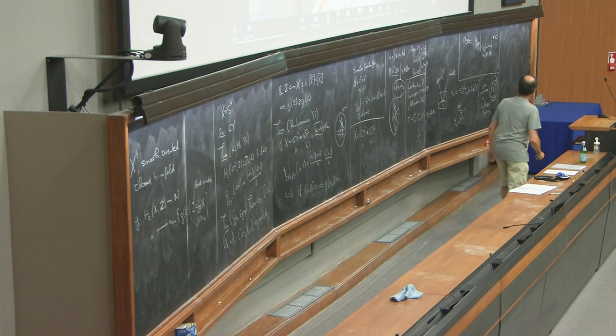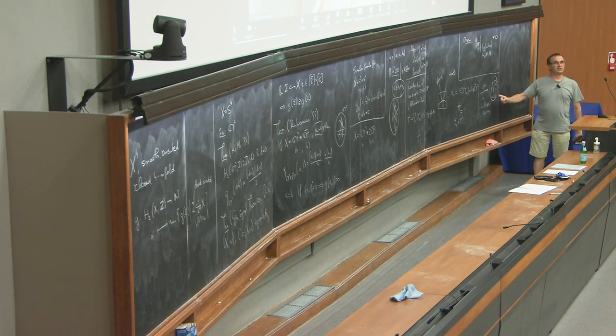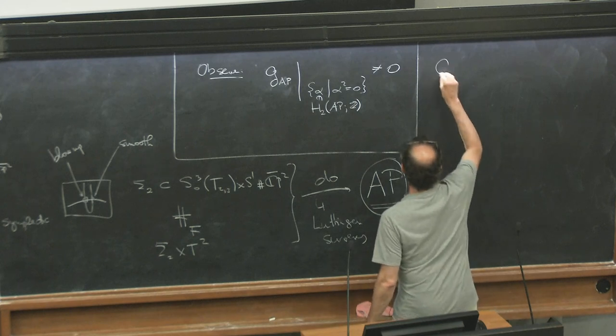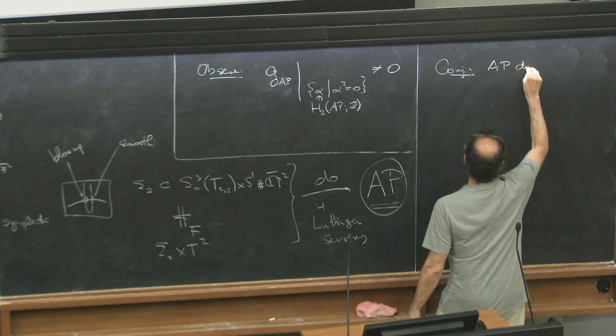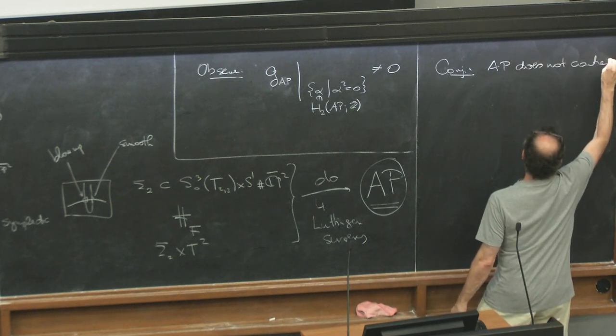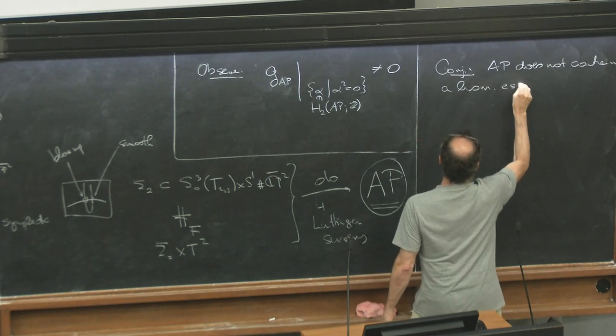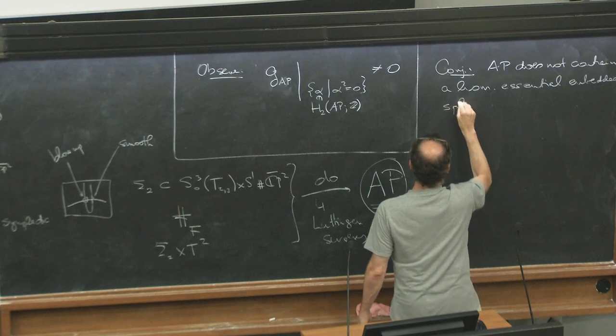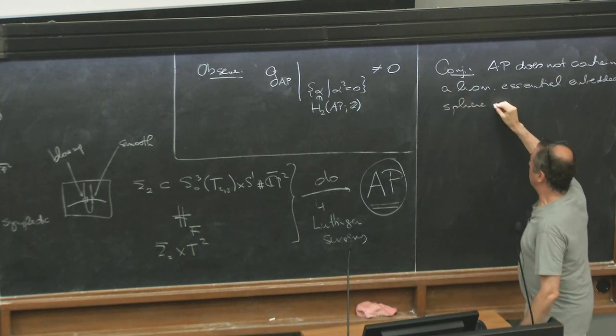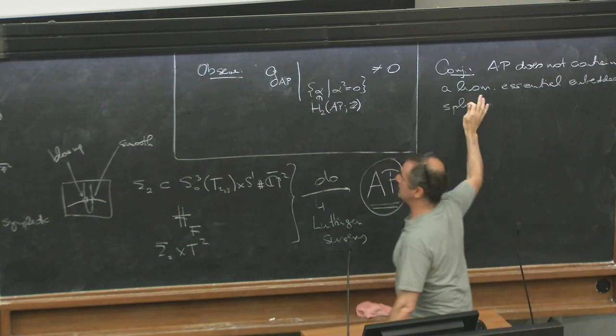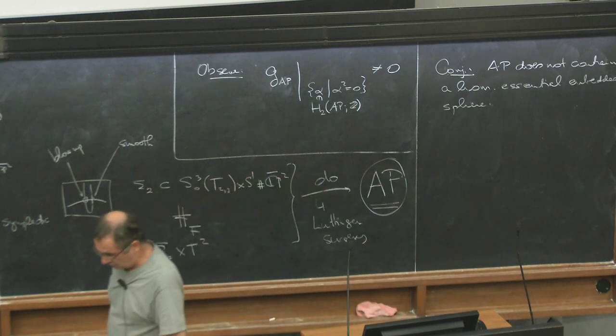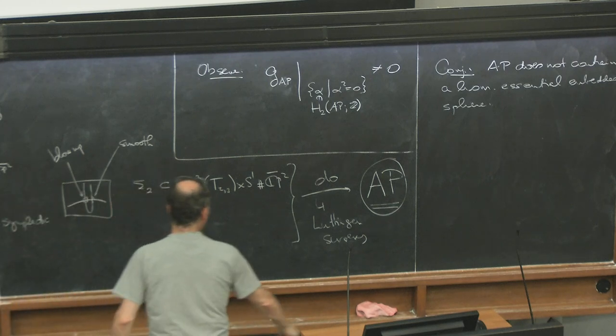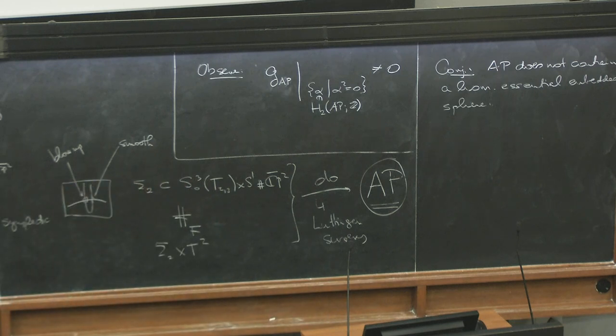So here is a little conjecture we have. We spent a lot of time trying to find a sphere in this AP, and we didn't. So what do you do if you don't find something? You think that it doesn't exist. So conjecture: AP does not contain a homologically essential embedded sphere. I have no good argument why this should be true, and the only foundation of stating this is because we didn't find any. Speaking of which, it's always a nice question to try to understand spheres in four manifolds. And let me quote another old question.